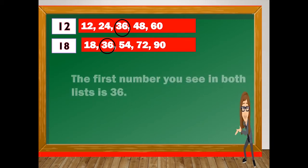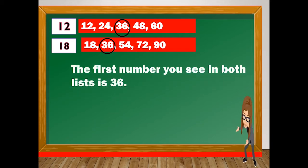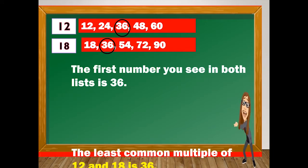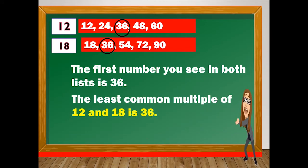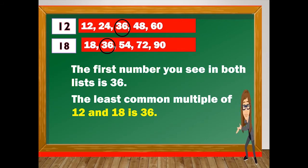The first number that you see in both lists is 36. So the least common multiple of 12 and 18 is 36.